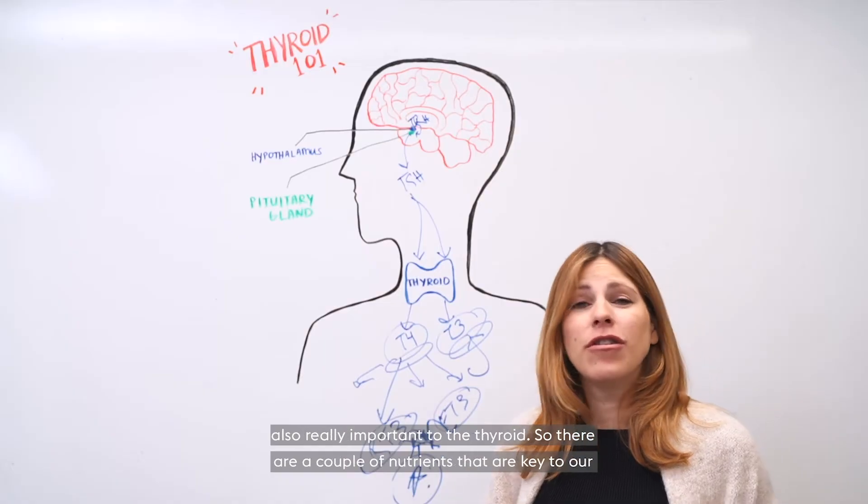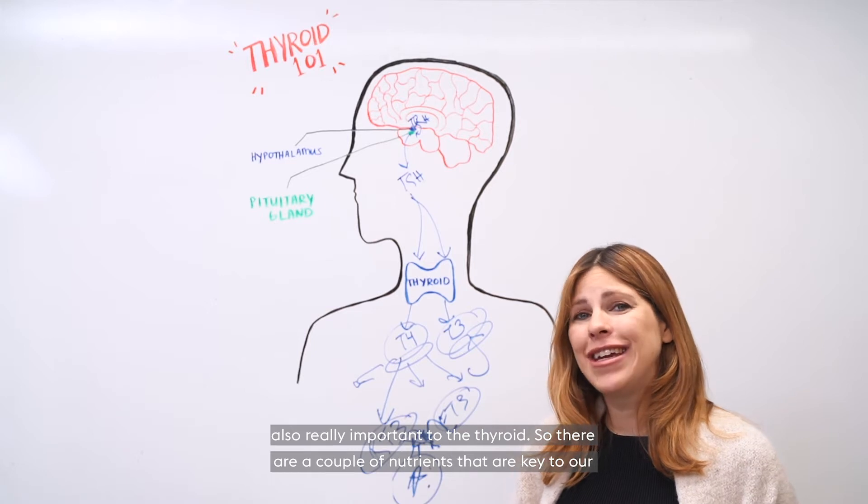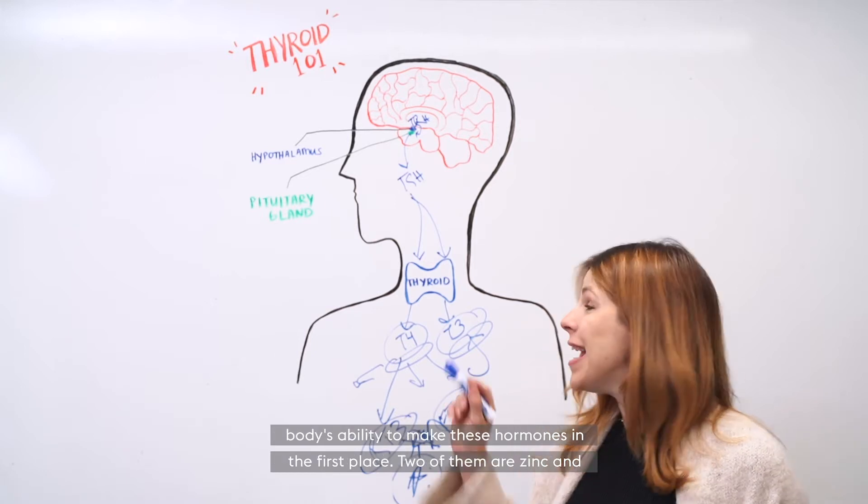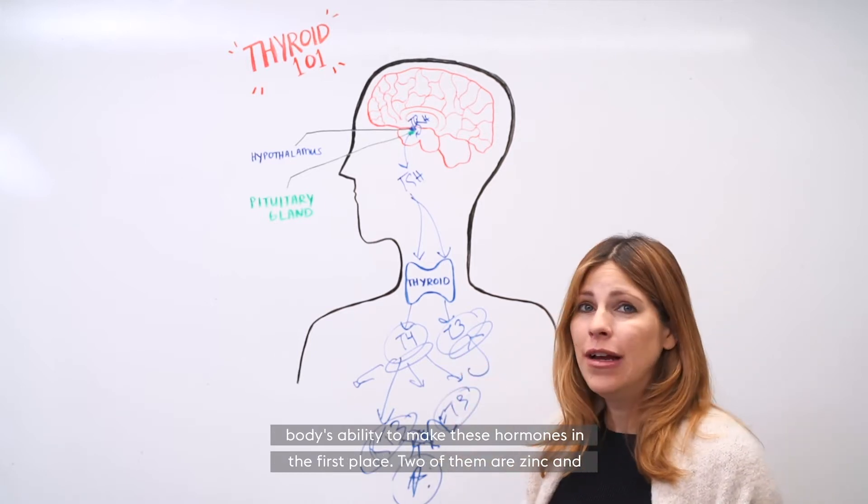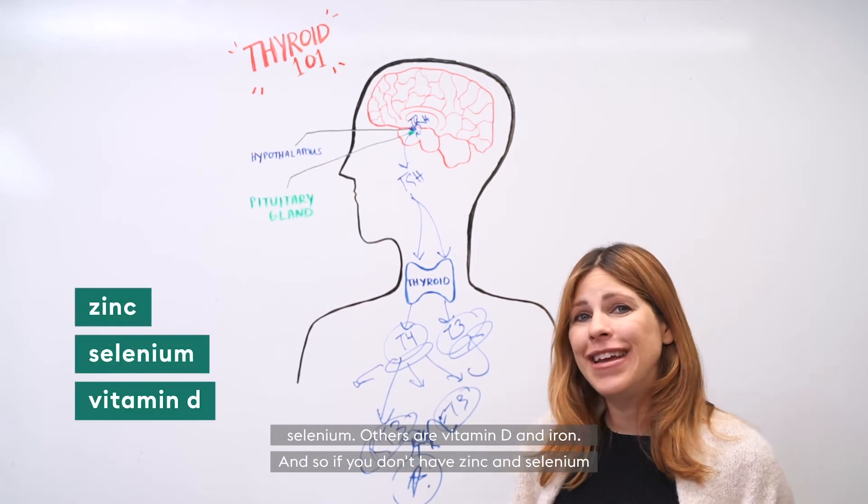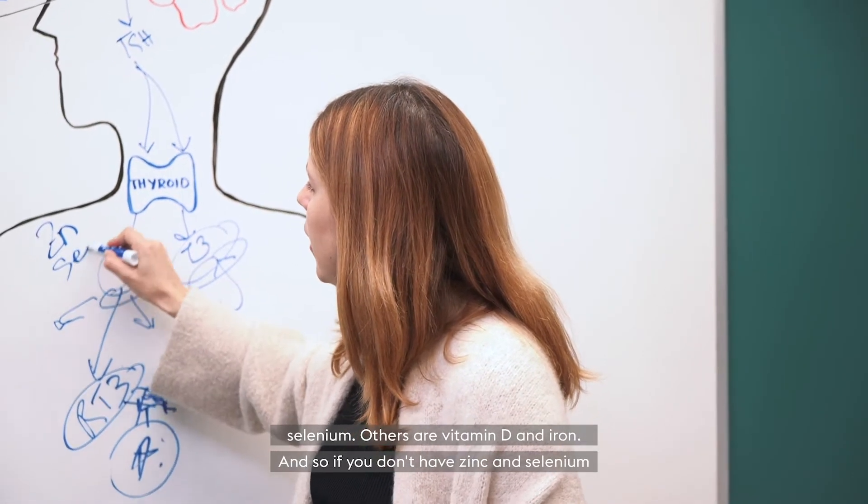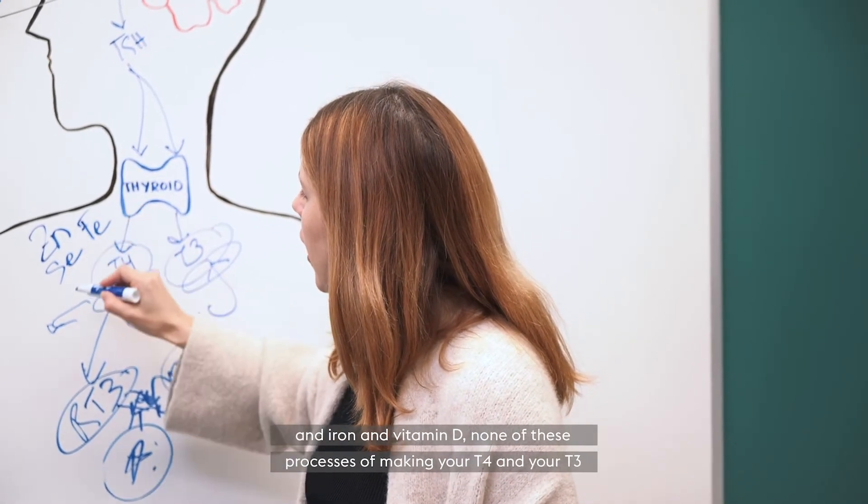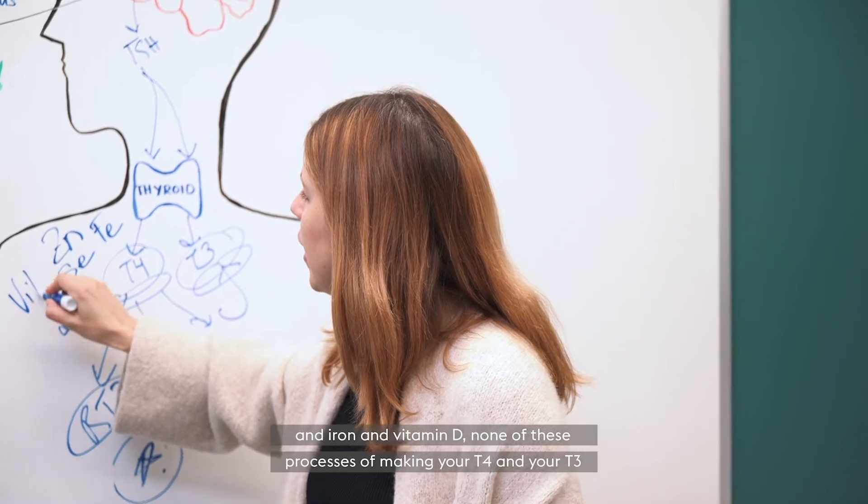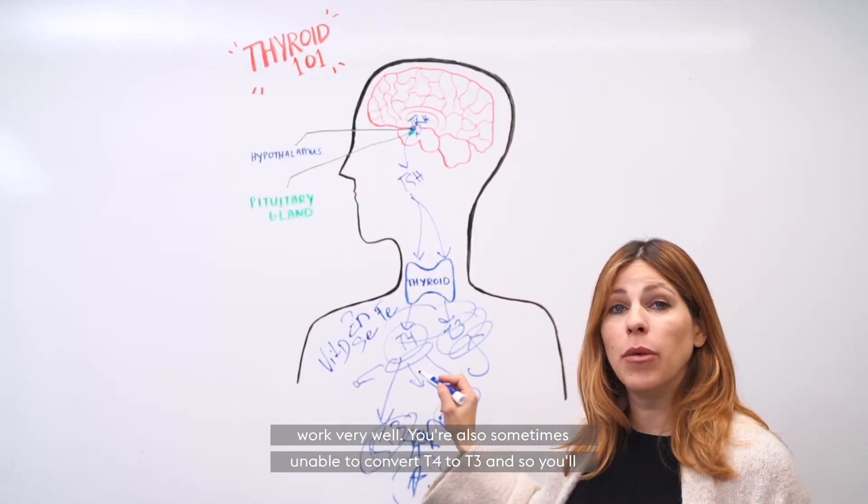Now, nutrition is also really important to the thyroid. So there are a couple of nutrients that are key to our body's ability to make these hormones in the first place. Two of them are zinc and selenium. Others are vitamin D and iron. And so if you don't have zinc and selenium and iron and vitamin D, none of these processes of making your T4 and your T3 work very well.